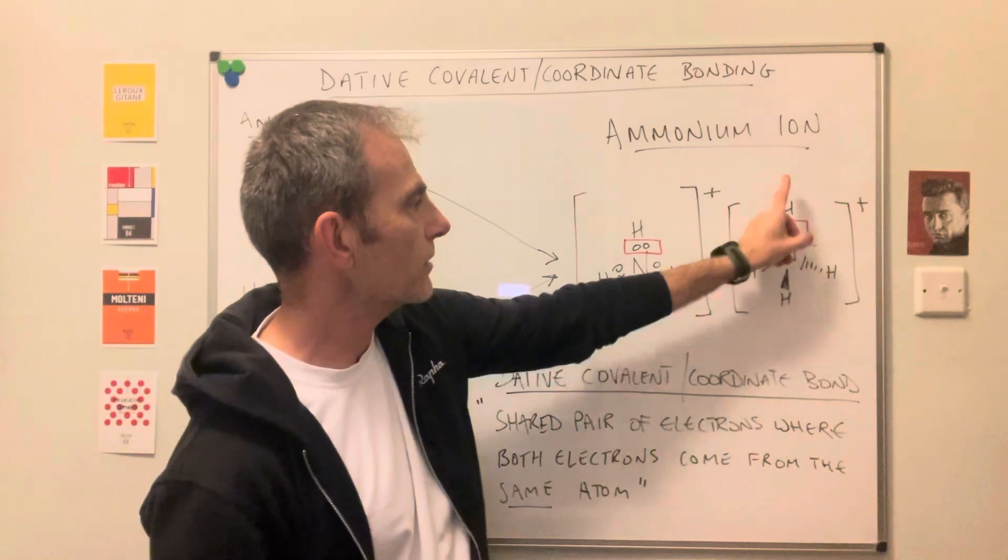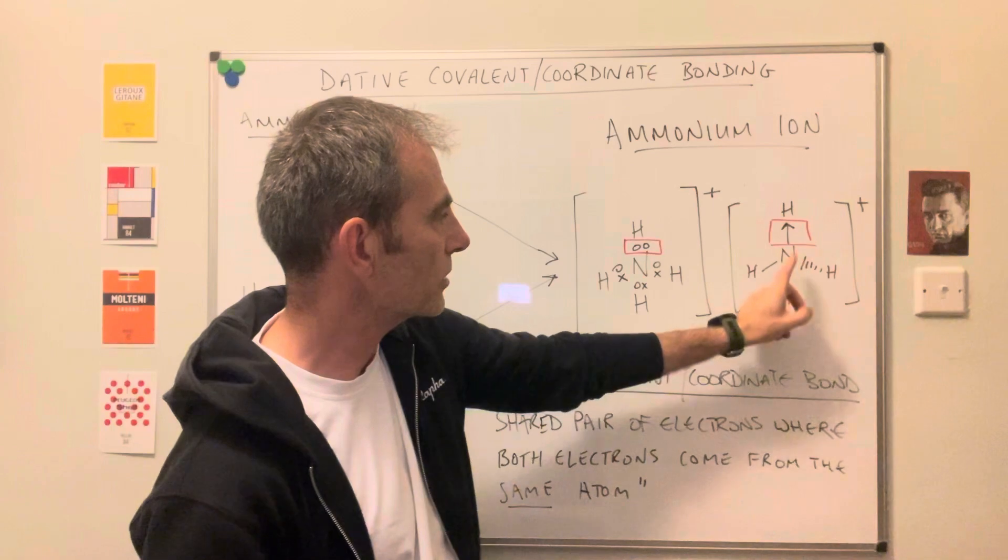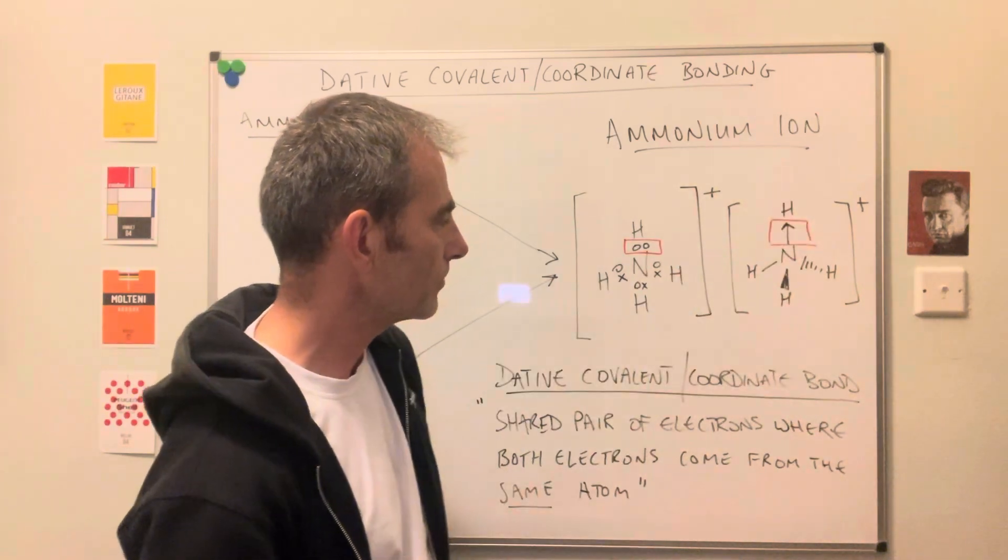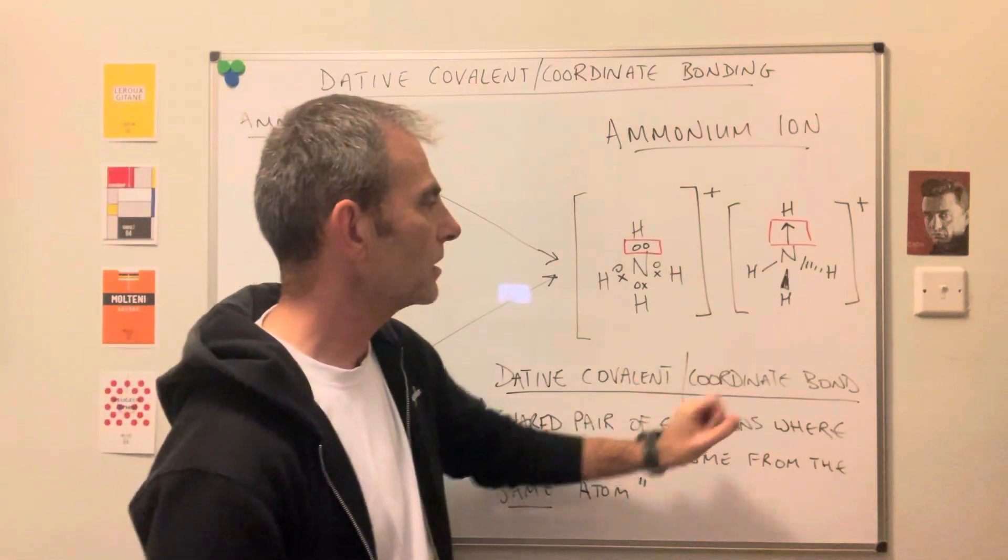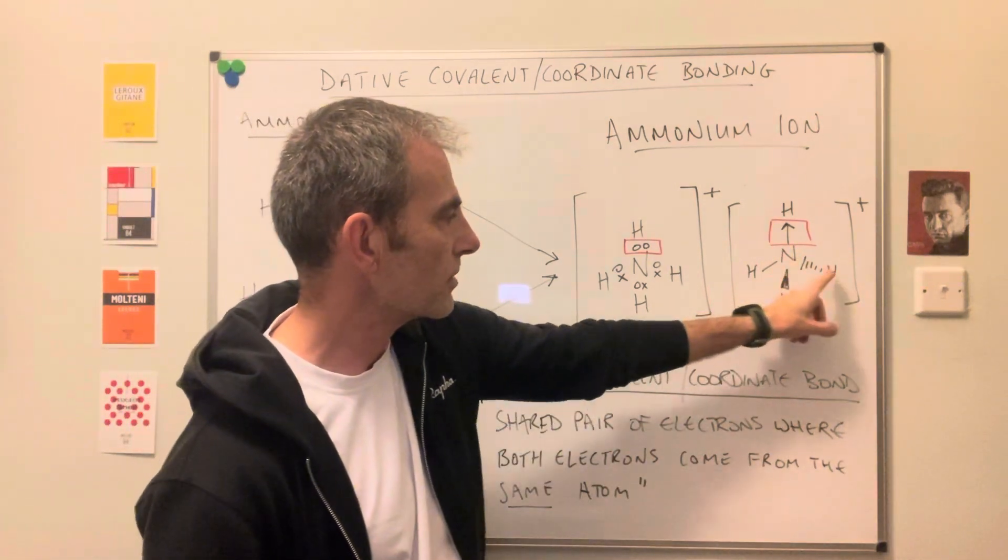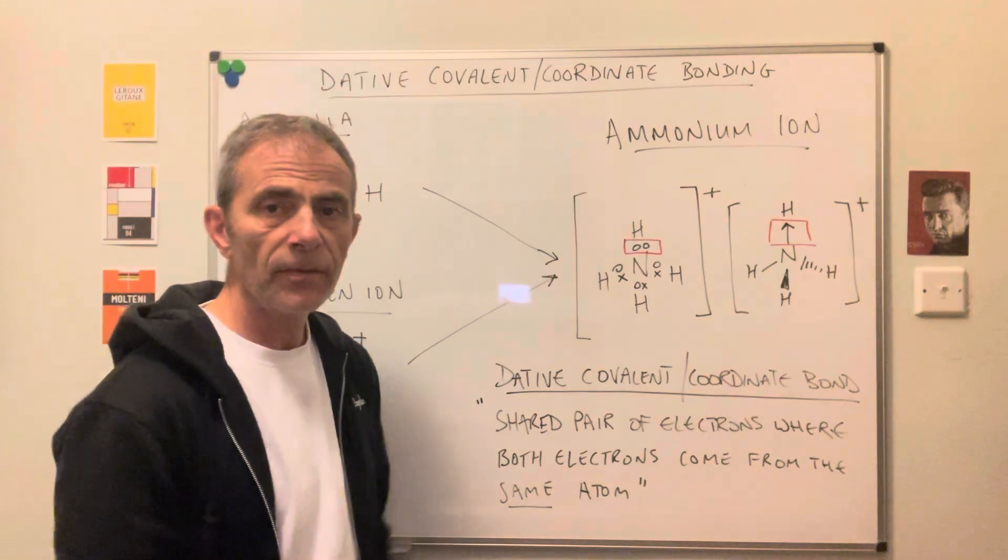And the direction of the arrow shows where the electrons are coming from. So they're coming from the nitrogen, they're going to the hydrogen, so the arrow points that way. This hydrogen here is the one that's coming out of the plane, and the one that's represented like that is going behind the plane. Hope that was helpful.